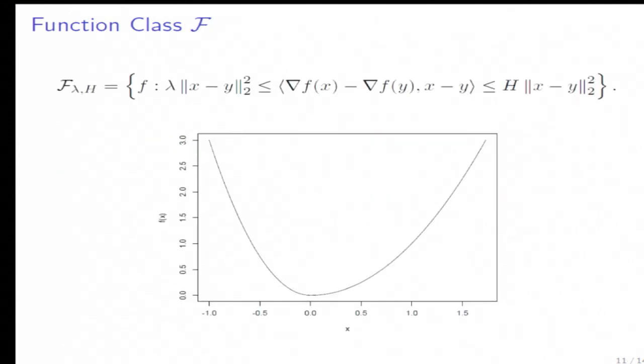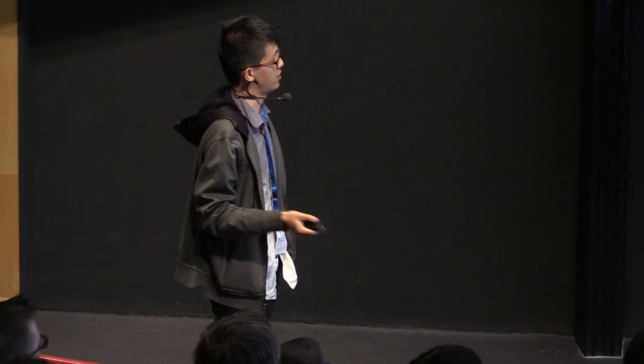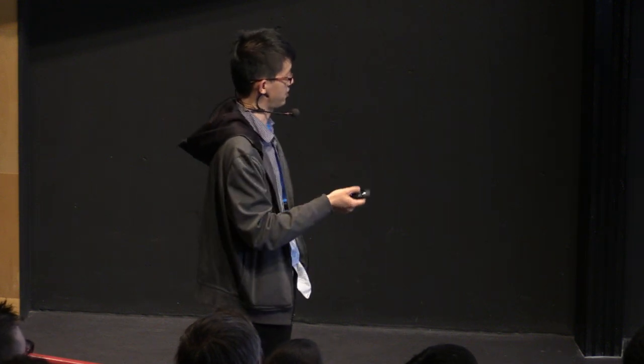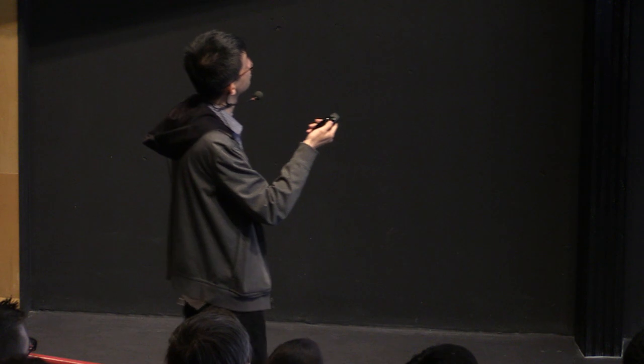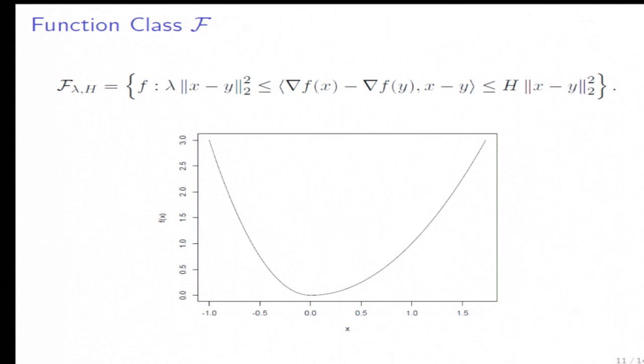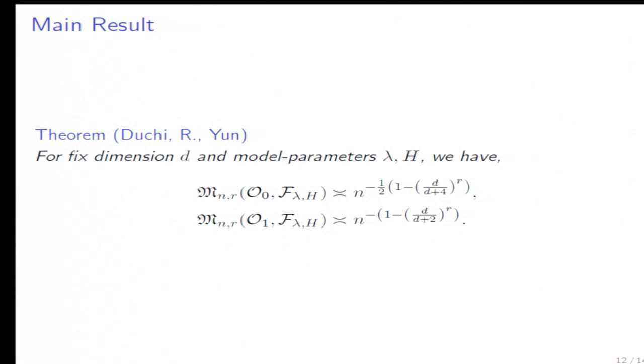Let me introduce the function class for this talk. In our paper we considered different function classes. We consider strongly convex and strongly smooth function classes. Essentially, this says the curvature of each function has to be both lower bounded and upper bounded—lower bounded by lambda and upper bounded by H. These two are the parameters for the function class.